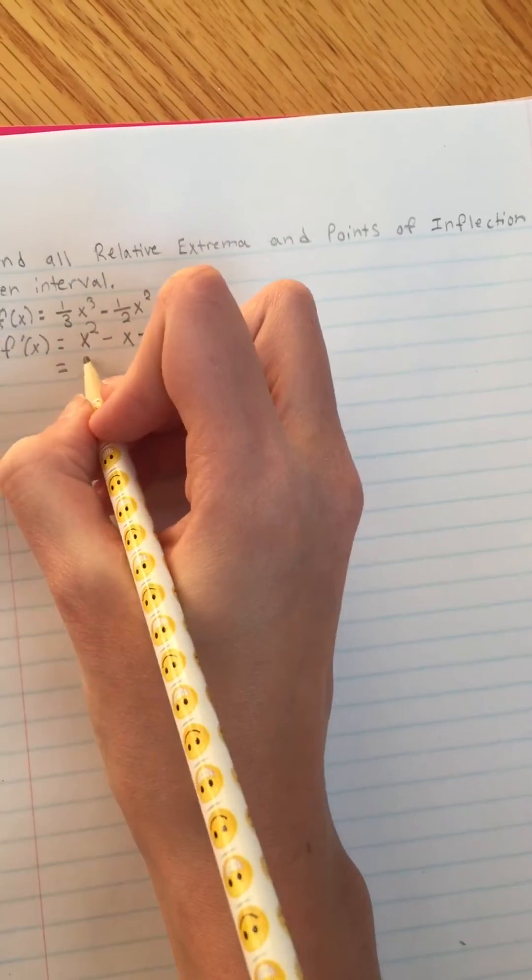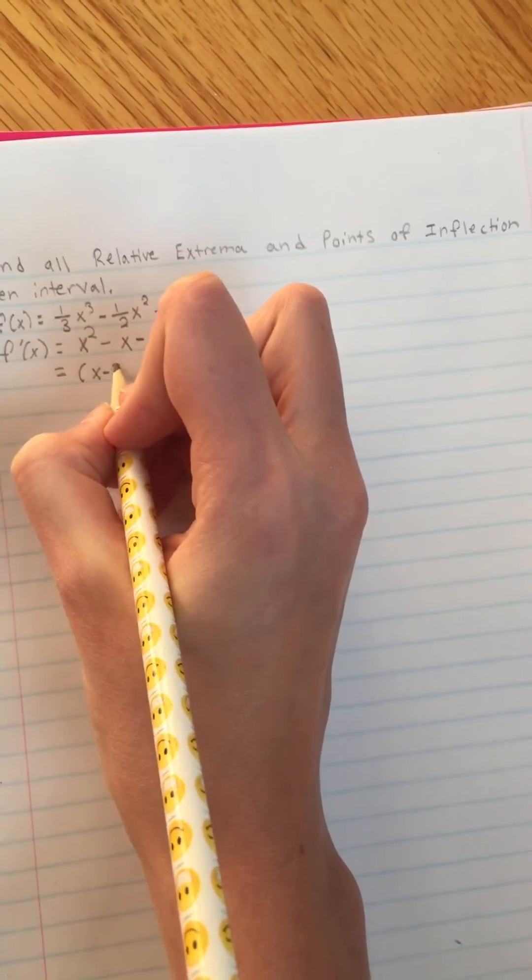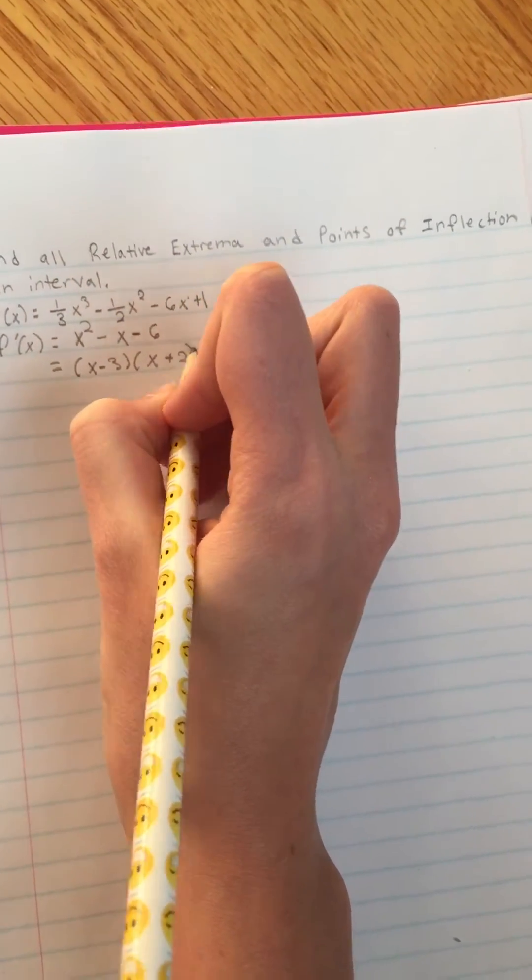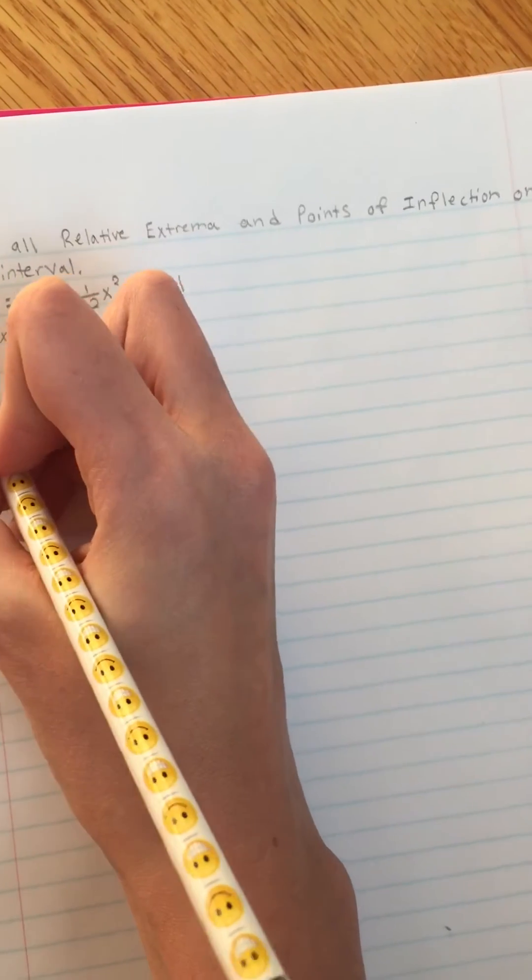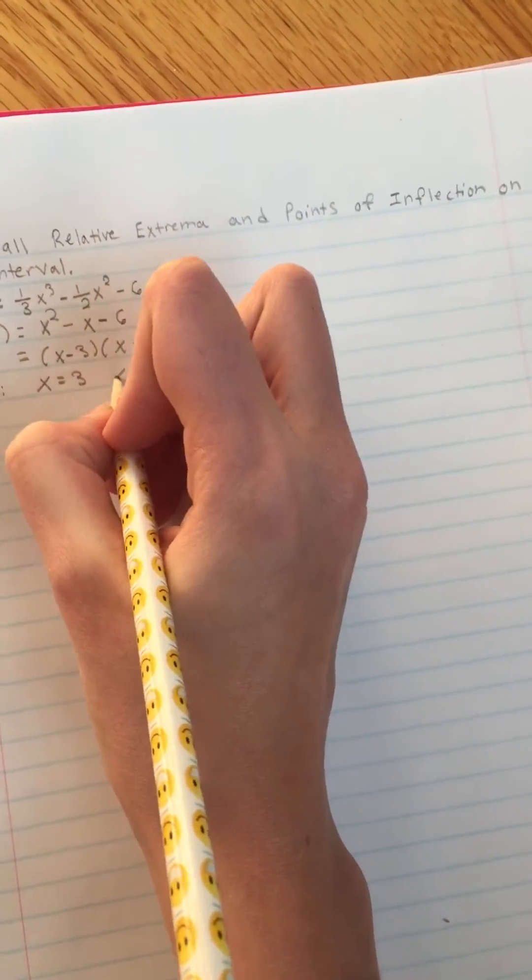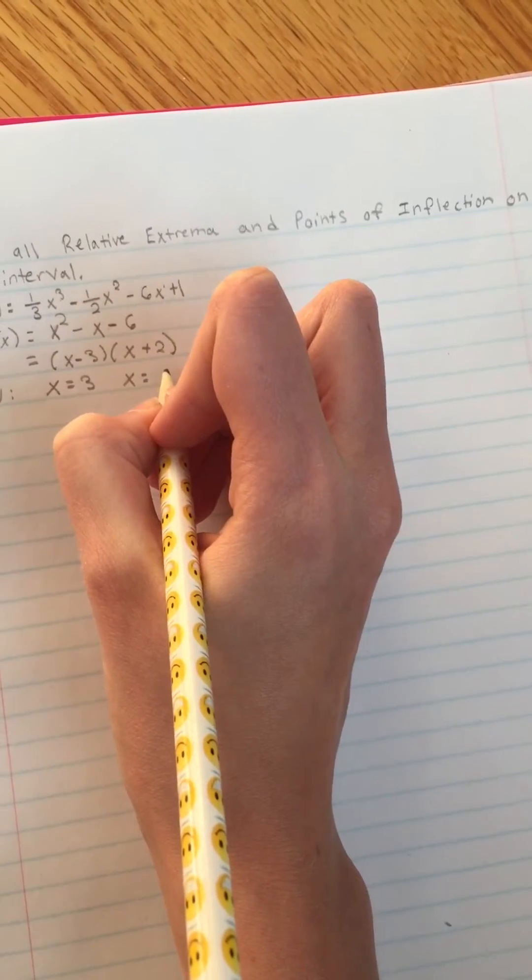The next step is to factor it out, so this one's going to come out to be x minus 3 and x plus 2. When you set that equal to 0, the critical numbers here are going to be x equals 3 and x equals negative 2.